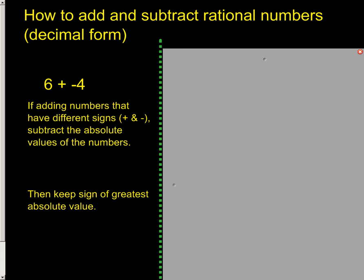Okay, so the first rule is that if you actually have two integers that have different signs, this is a positive and this is a negative, you would actually find the absolute value of both of them. So what's the absolute value of 6? It's 6. What's the absolute value of negative 4? It's 4.